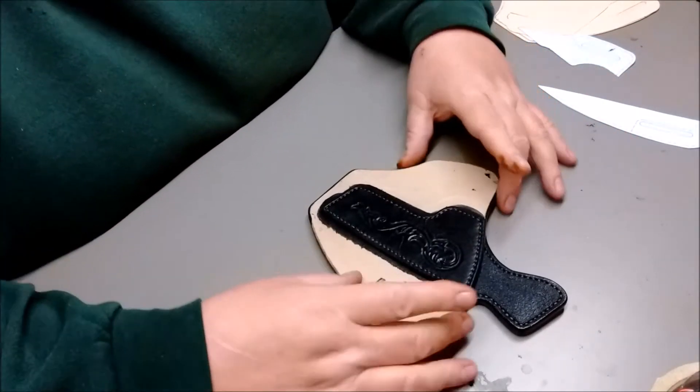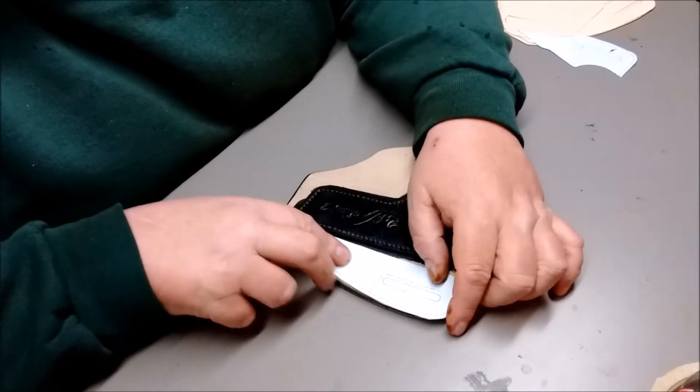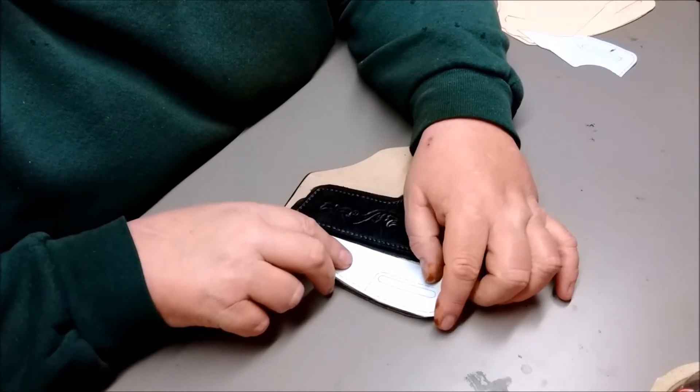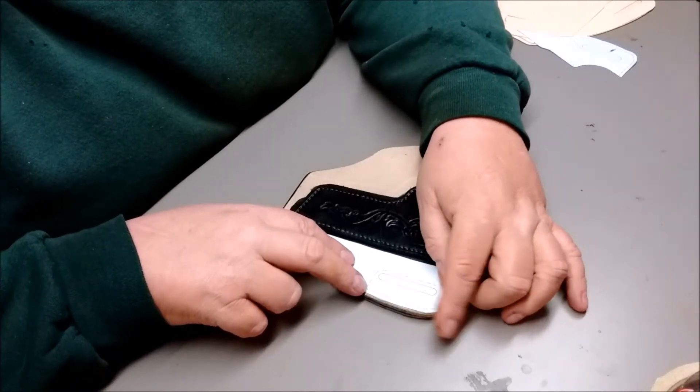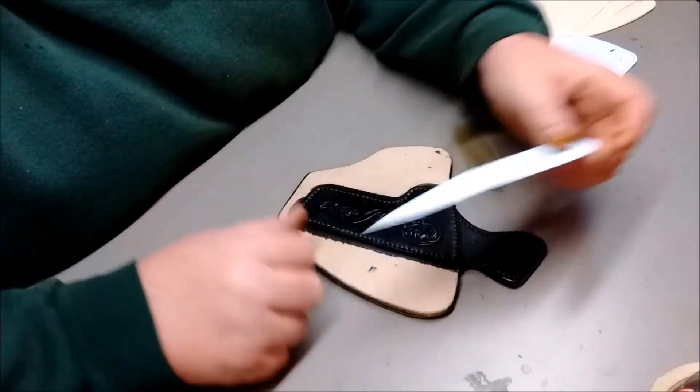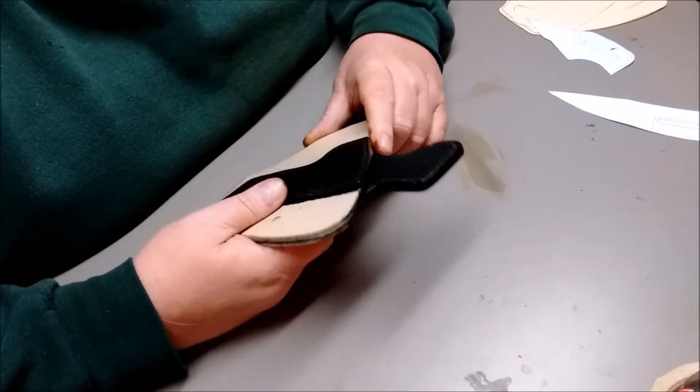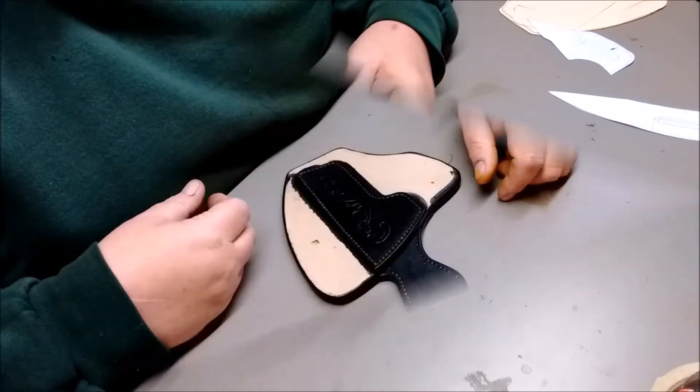So we're gonna get our edges trimmed up. I will use this piece of the pattern to mark for my belt loops, for my belt slots. And that will come as soon as I'm done sanding all this. I'm gonna use my Dremel tool to do it. And I'll be back.